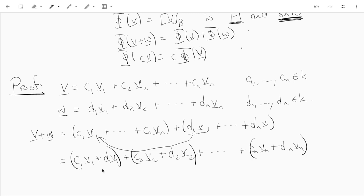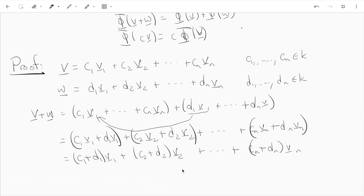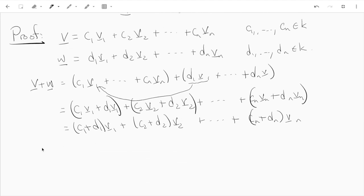Now the distributive law says that this vector is really (c1 + d1) times v1. But now we've written v plus w as a linear combination of v1, v2 up to vn, so the scalars that appear, they must be the coordinates of v plus w.